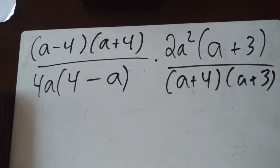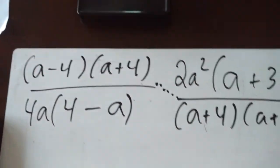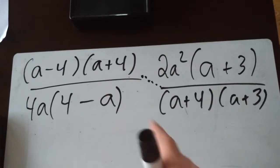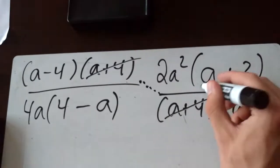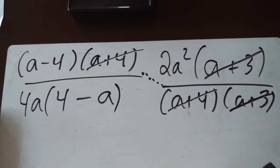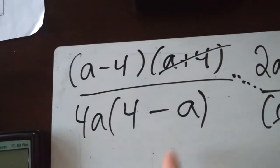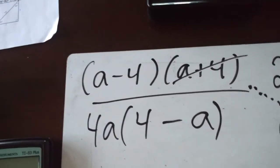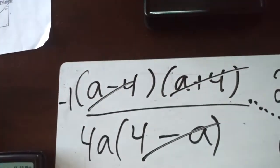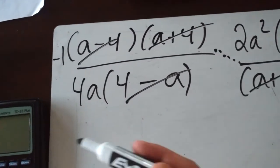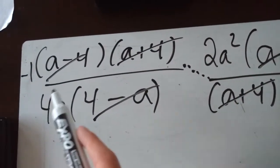Now that the whole equation is completely factored, we have a multiplication, so we multiply tops together and bottoms together — almost like one big fraction. We can cancel (a plus 4) from top and bottom, and (a plus 3) from top and bottom. The interesting case is (a minus 4) on top and (4 minus a) on the bottom. These cancel but leave a negative 1 — a minus 4 divided by 4 minus a equals negative 1.